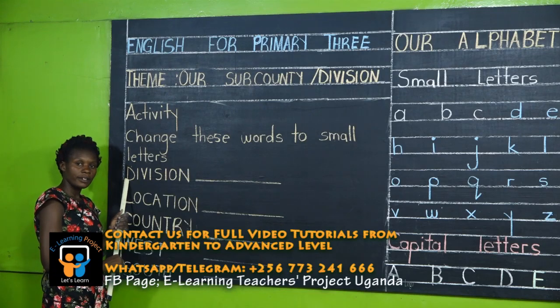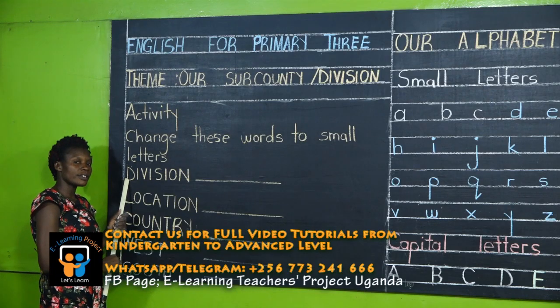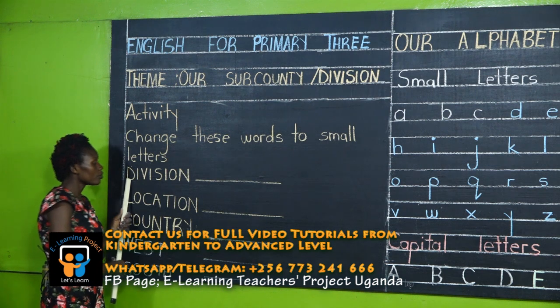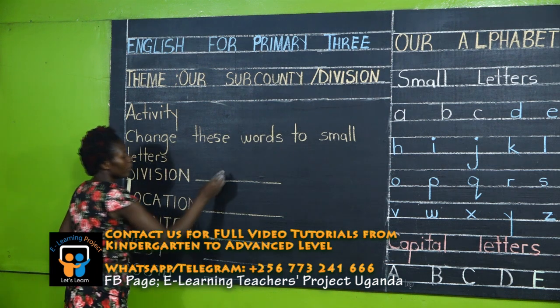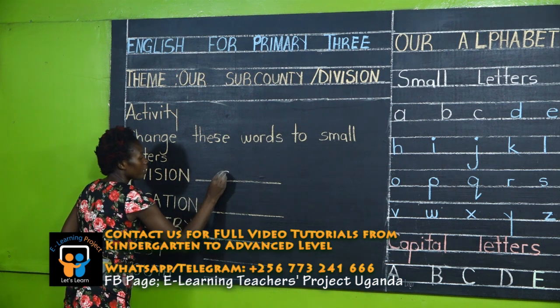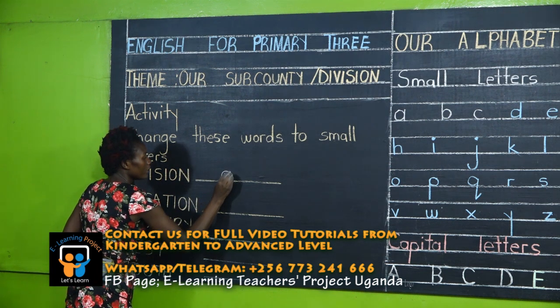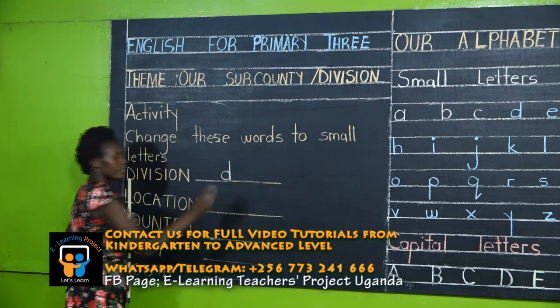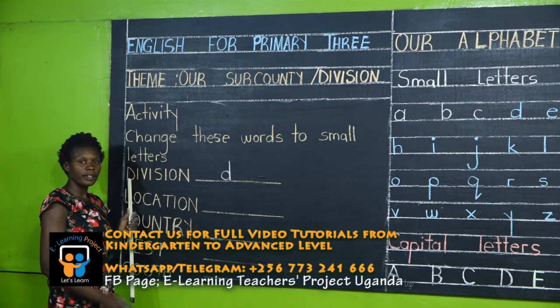The first letter is letter D, but it is a capital D, so you are going to write a small D, like that. Is it okay?